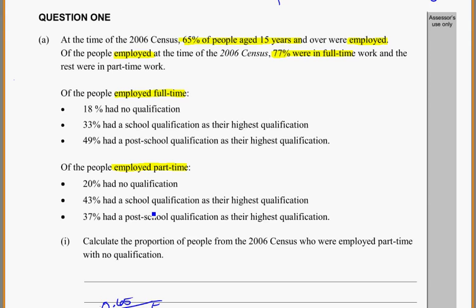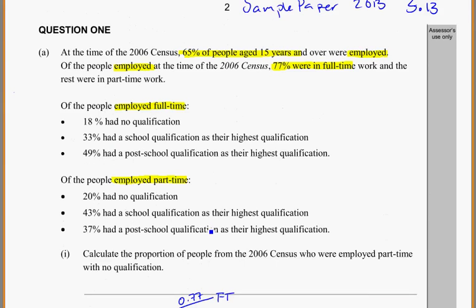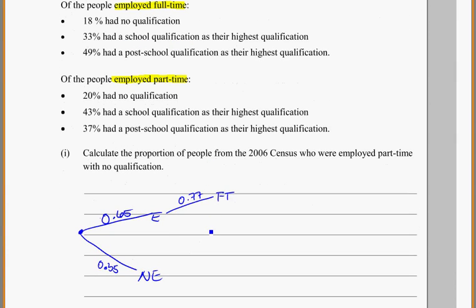Now from the ones that are employed, 77% of them are full-time. So that's 0.77. And they say the rest work part-time. Coming down here, part-time. Within these little splits off the probability tree, we have to add up to one. So 0.77 there, we should get 0.23 here for part-time.